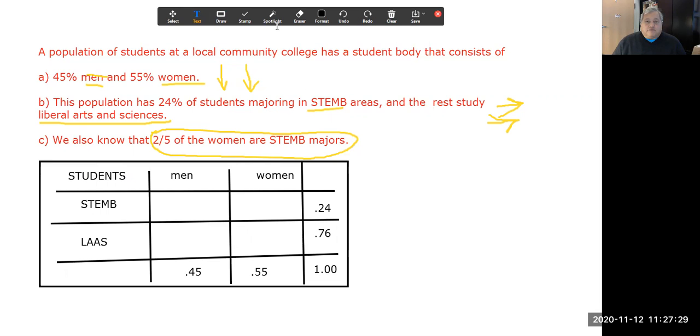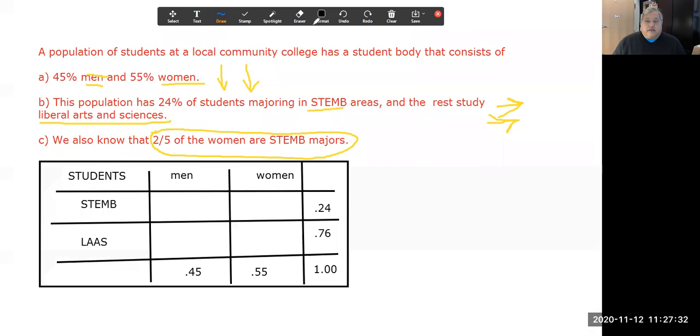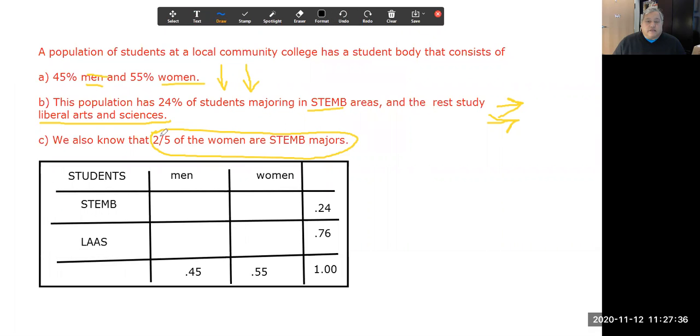The last part of this comes to us via this particular sentence here, where we say that two-fifths of women are STEMB majors. So where are the women? In this particular statement, women make up 55% of the data. So two-fifths of women would make 22% of the population. So 22 out of 55 is two-fifths of the whole thing. This 22% here is representative of the two-fifths of women who are STEMB majors. 22 out of 55 is two-fifths of the 1.00. So that's how we find that particular value.